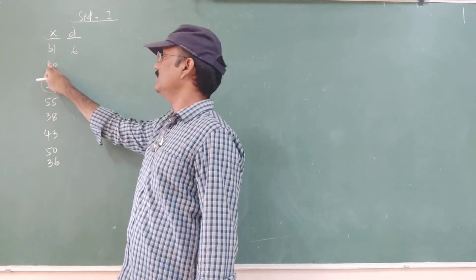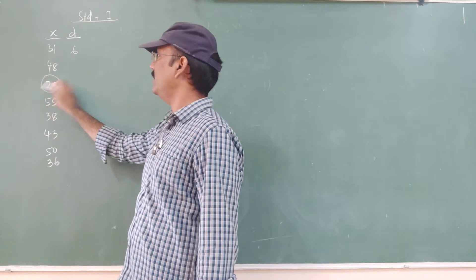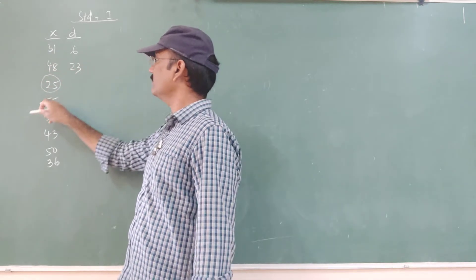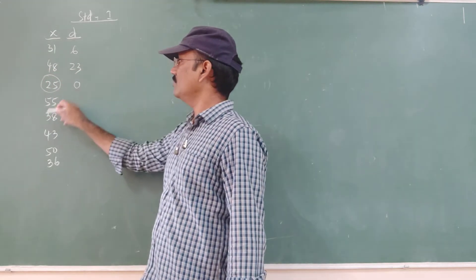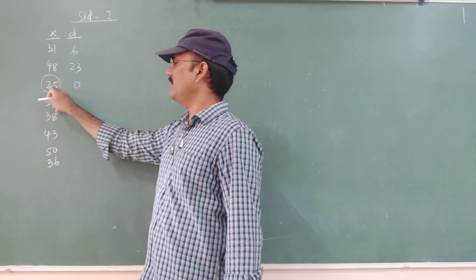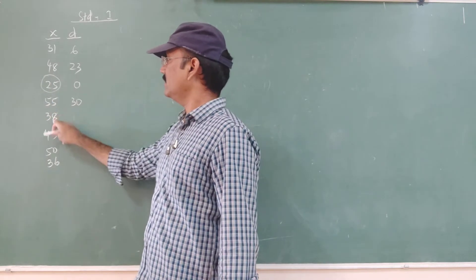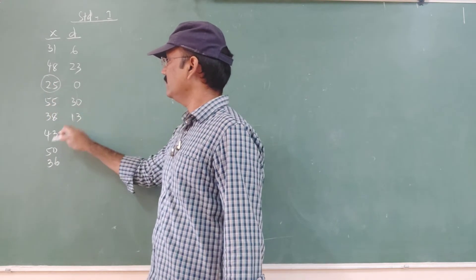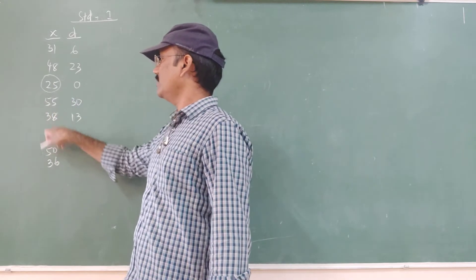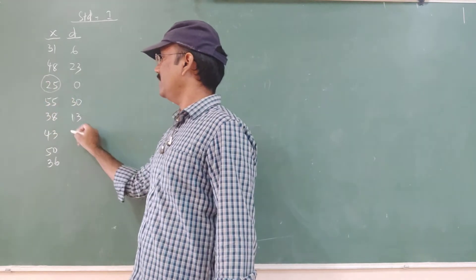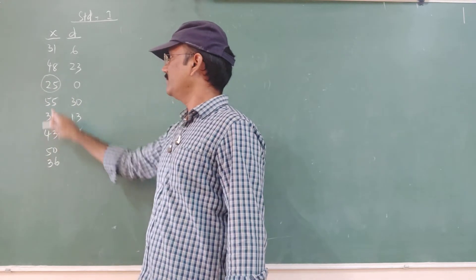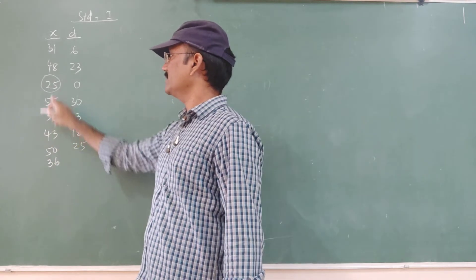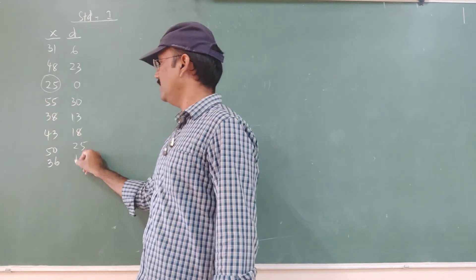So the D values are: 48 minus 25 = 23, 25 minus 25 = 0, 55 minus 25 = 30, 38 minus 25 = 13, 43 minus 25 = 18, 50 minus 25 = 25, 36 minus 25 = 11.